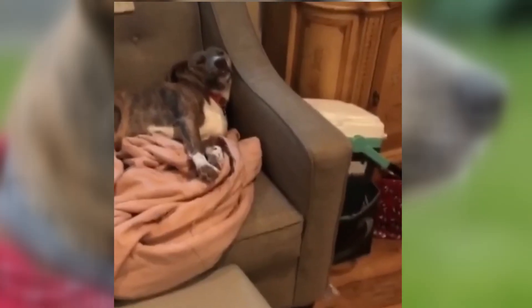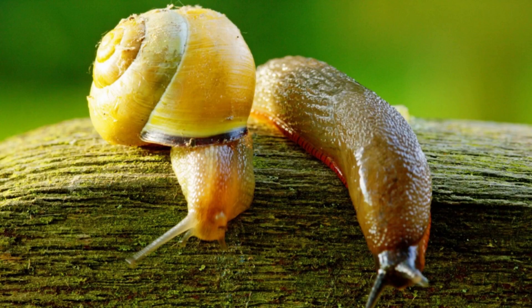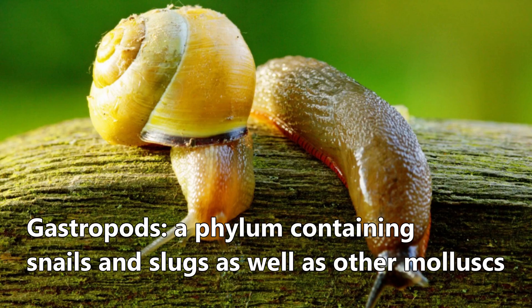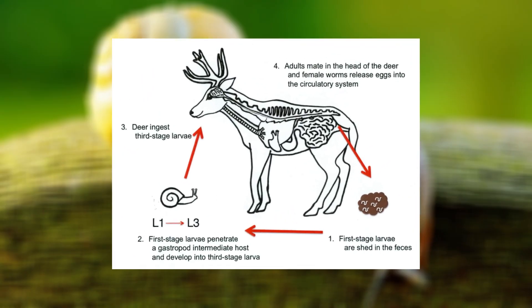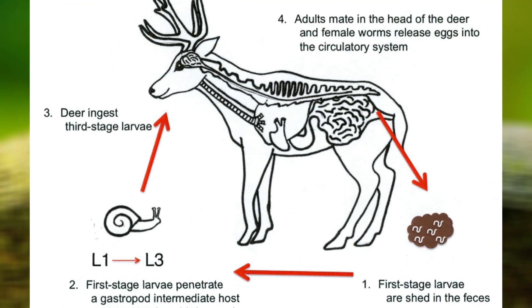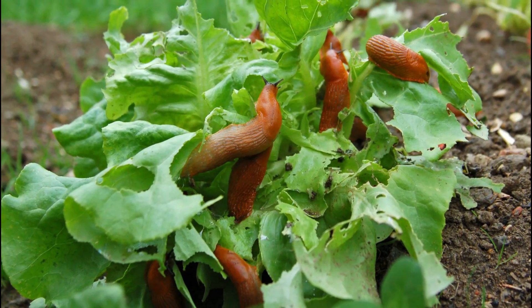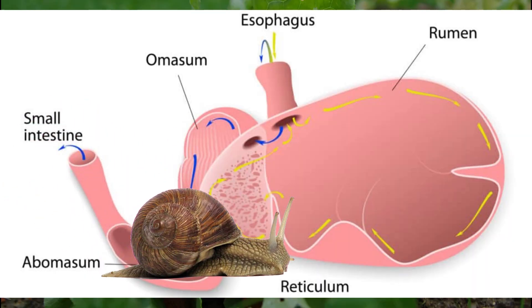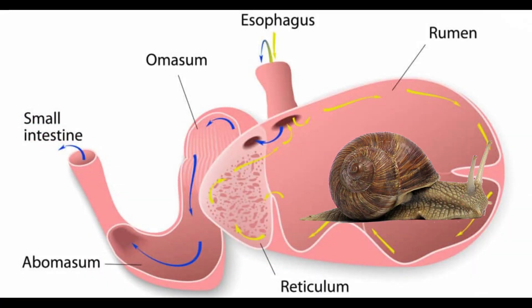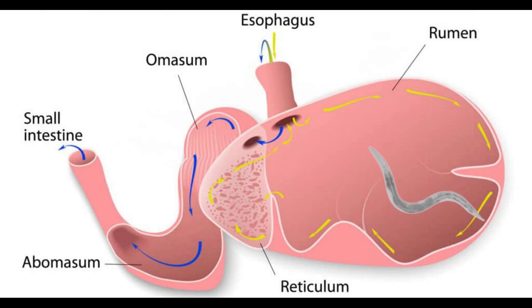Snails and slugs also love to eat deer poop, and this is where the life cycle of the parasite begins to take place. Inside these gastropods, the parasite larvae begin to grow. After this, the parasite starts to wait — waiting for a deer to accidentally eat the slug or snail it's currently in. Deer don't intentionally eat slugs or snails; however, there are a lot of snails out there, and they often like to hang out under leaves, so the deer often get a little extra protein when munching on some leaves.